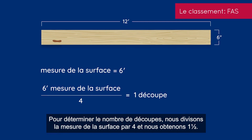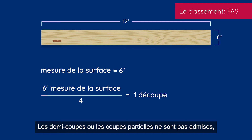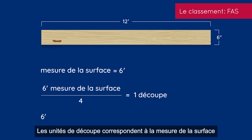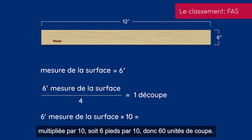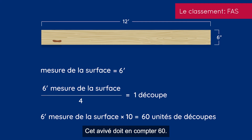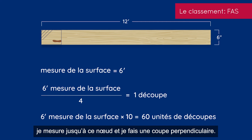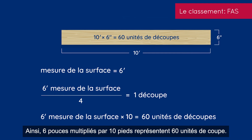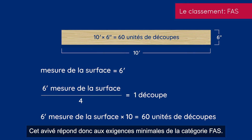The number of cuttings: take the surface measure, divide by 4, and you get 1½. We cannot take half or partial cuttings, so we allow one cutting on that board. Cutting units needed is surface measure times 10, or 6 times 10 — we need 60 cutting units, those little 1-inch by 12-inch pieces. Measuring from one end up to the knot and making a cross cut, I find 6 inches wide and 10 feet long: 6 times 10 equals 60 cutting units. That board meets the minimum requirement for FAS.